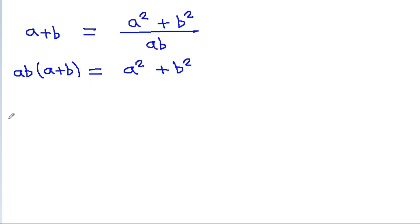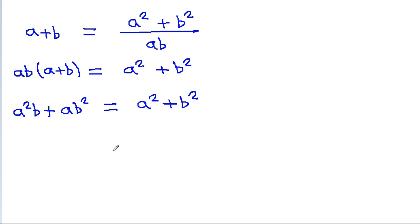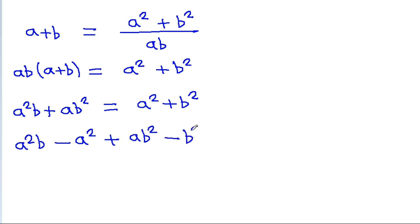And we get a squared b plus ab squared is equal to a squared plus b squared. Now if we separate terms containing a squared and b squared, we get a squared b minus a squared plus ab squared minus b squared is equal to 0.